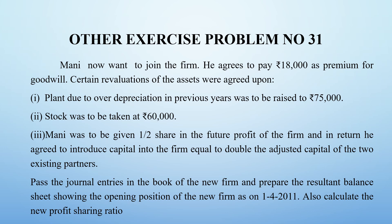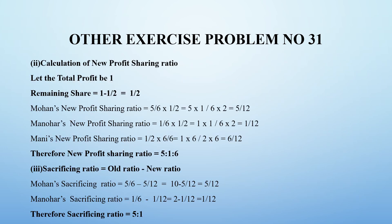We also need to calculate the new profit sharing ratio. Even though it is not specifically mentioned in some problems, by default we have to find it. In this problem, it is specifically mentioned. So as usual, we assume that the total profit of all three partners is 1. Mani's share is mentioned in the question - that is one by two, so Mani gets half the profit.